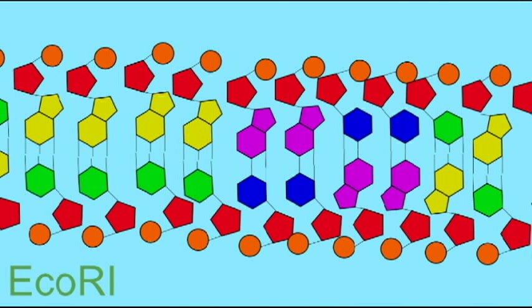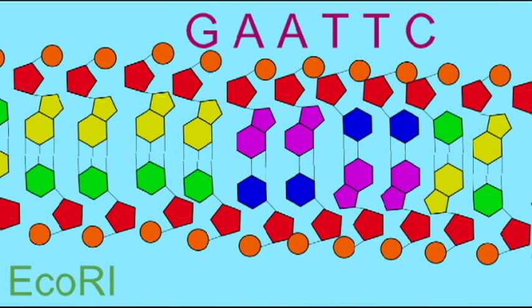There are enzymes which are capable of completely digesting a strand of DNA, separating each nucleotide and then separating the components of each nucleotide. The human small intestine makes such enzymes.